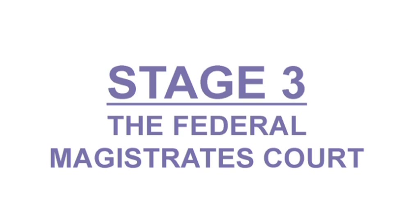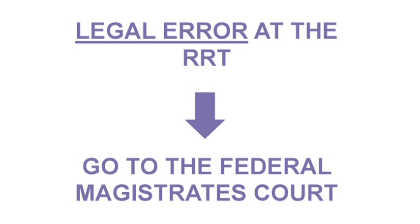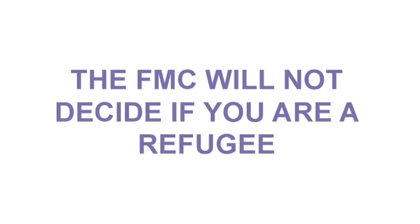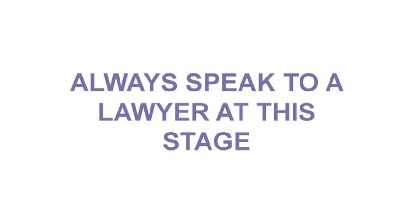The third stage is to make an application to the Federal Magistrates Court. If the RRT has rejected your case and there was a legal error in the decision, you can lodge an application with the Federal Magistrates Court. Legal error is a technical term — in simple terms it means there was a mistake in the way the RRT applied the law. This court stage can be very expensive and is based on technical legal argument, so you should definitely try to get legal advice and support. It's important to understand that the role of the Federal Magistrates Court is not to assess if you are a refugee — its only role is to decide if there was an error in the way your case was decided. You can only make this application for very specific legal reasons, so it is important to get a lawyer to help you decide if you should make an application at this stage.